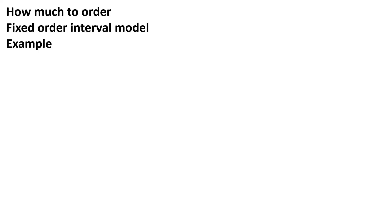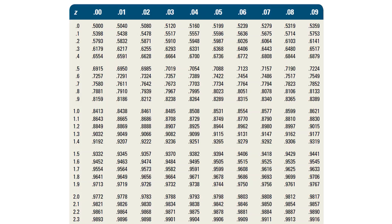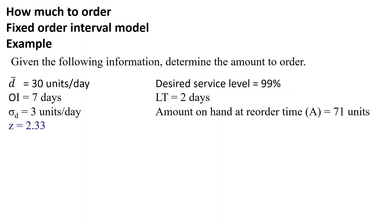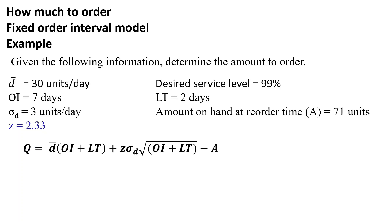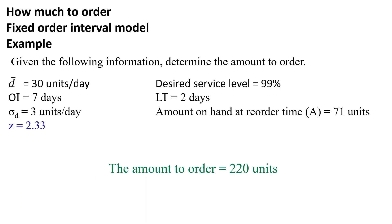Example for this model: given the following information, determine the amount to order. The first step is to find the Z value corresponding to a service level of 0.99 by finding the closest value to 0.99 in the table. The Z value is 2.3 + 0.03 = 2.33. Now substitute into the equation with the given information. This results in Q = 220 units. So, the amount to order every 7 days is 220 units.